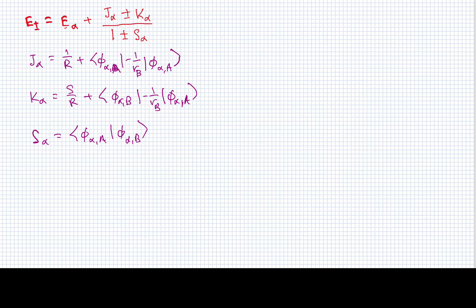With these definitions: when the internuclear distance r is small, the first term in J and K dominates, so they become very large and positive. But they both have terms that will make them negative. J actually becomes only slightly negative, while K becomes significantly more negative.